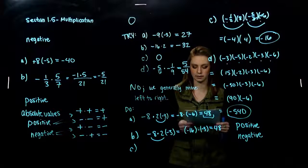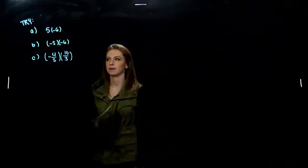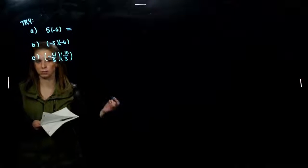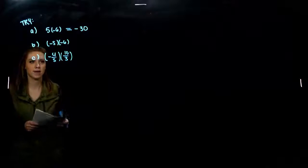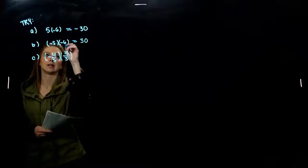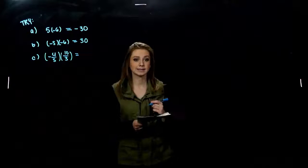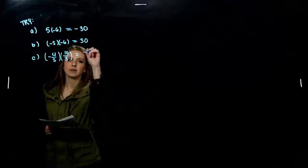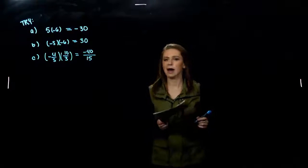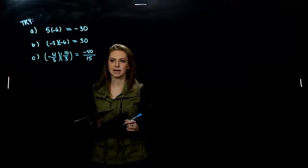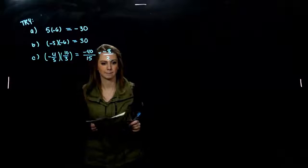Take those three examples and multiply them together, simplifying if you can. Part A: positive times negative — one negative, which is odd — we get negative 30. Part B: negative times negative — even number of negatives — we get positive 30. Part C: multiplying straight across the top and bottom. Assigning the negative from 4/5 to the top gives negative 40 over 15. Can we simplify? 40 and 15 share a factor of 5, so we get negative 8 over 3. Simplified.